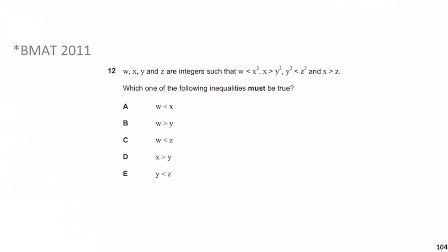This question is a bit of a teaser. The key fact to spot is that x > y². If x is greater than y squared, that must mean x is also greater than y. For example, if x = 29 and y = 5, then 29 > 25 (= 5²), and clearly 29 > 5. So x > y always follows from x > y², and the answer is D.